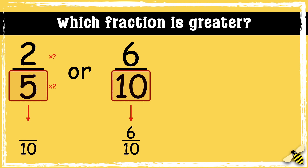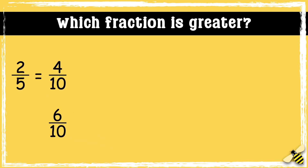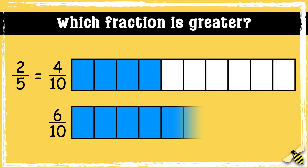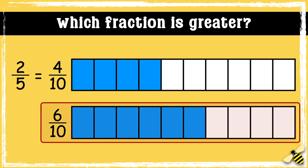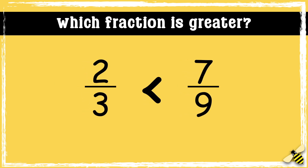So we multiply 5 by 2 to get 10, so we also need to multiply the numerator by 2. 2 times 2 is 4. Now that we have the same denominators we can compare the fractions. Let's have a look side by side: 2 fifths or 4 tenths, and 6 tenths. We can see that 6 tenths is greater, so 2 fifths is less than 6 tenths.